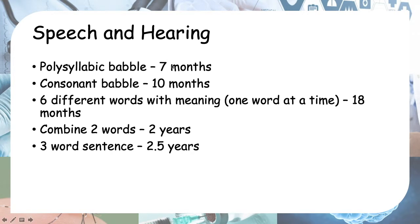The ages to remember are 7 months, 10 months, 18 months, 2 years, and 2.5 years. The way I remember this is: 7 plus 10, then add 1 is 18, then 2 and 2.5. So: 7 months polysyllabic babble, 10 months consonant babble, 18 months six words with meaning, 2 years two-word combinations, 2.5 years three-word sentences.